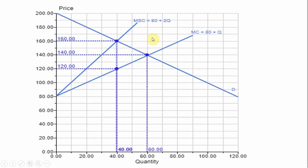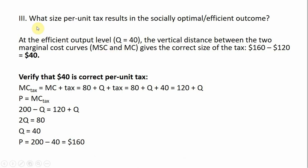The next thing I want to do is find a tax that would bring about this optimal condition, this socially optimal equilibrium. In the last step here, we're going to find what size per-unit tax results in the socially optimal efficient outcome.